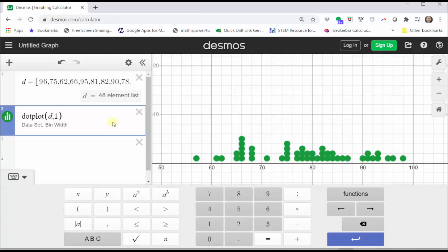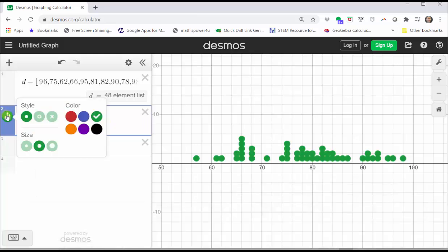Now let's click and hold on the green circle on the left and look at our options. We can change the style of the points, the size, as well as the color. Let's change the style to an X, the size to small, and the color to orange.